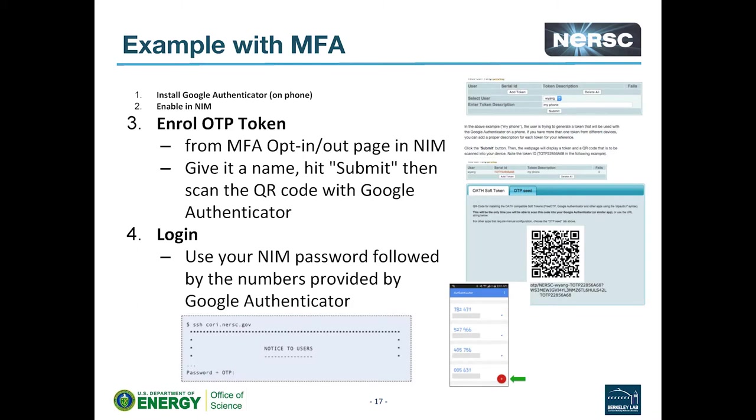So then you'll need your one-time password token. So from that, under the MFA opt-in opt-out page on NIM, it'll ask you for your token. So you give it a name. It's just, you know, my iPhone, hit submit, and it will bring up a screen that looks kind of like this with a QR code. And then if you open up Google authenticator on your phone, there's a big red plus button down the bottom, which is add another thing to authenticate to. And when you press that, it will look for a QR code to scan. And this is how the two systems link each other.